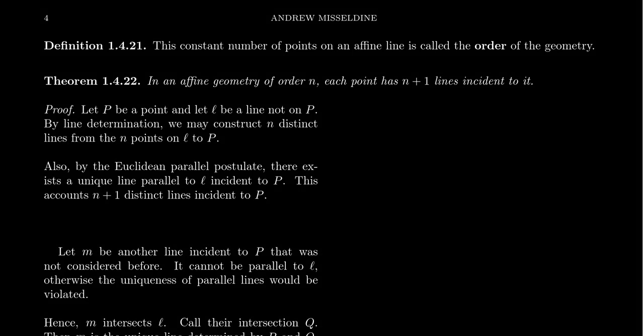In the previous video, we introduced the important idea of an affine geometry — an incidence geometry that satisfies the Euclidean parallel postulate, where all parallel lines are unique. We proved the most important result of affine geometry: all affine lines contain the exact same number of points. Since all lines have the same number of points, we can give that number a name: this is referred to as the order of the geometry.